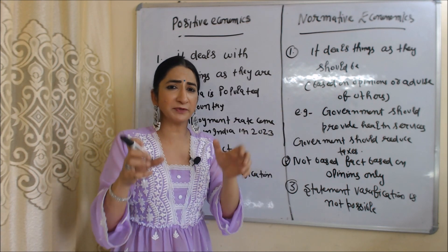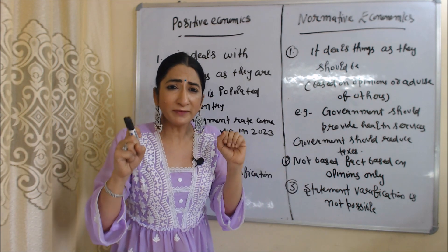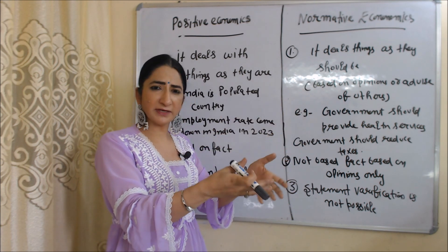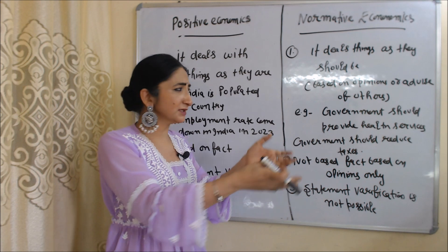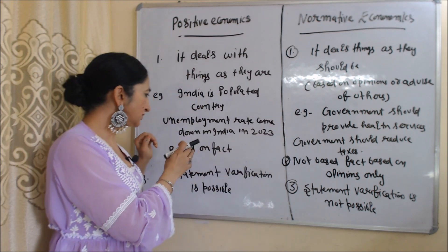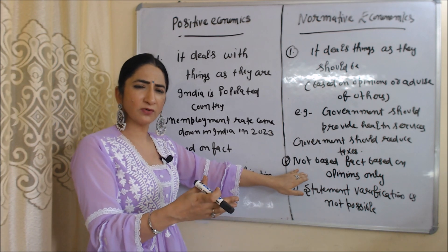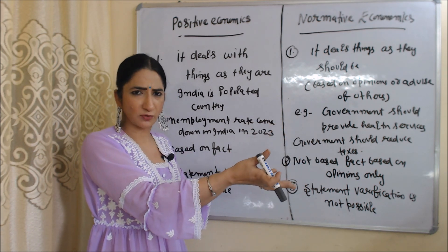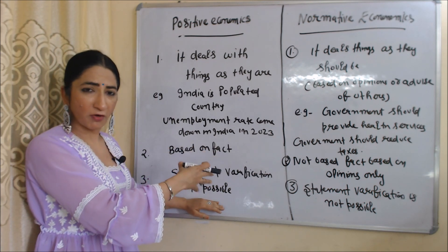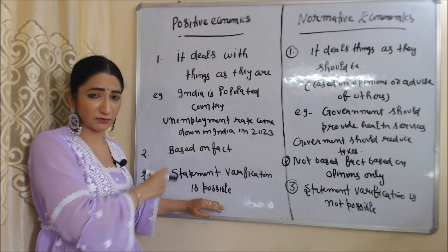Normative economics deals with things as they should be. It is based on opinions and advice of others. For example, economists may advise that the government should provide health services or reduce taxes. Positive economics is based on fact, whereas normative economics is based on opinions of others and is not based on fact.